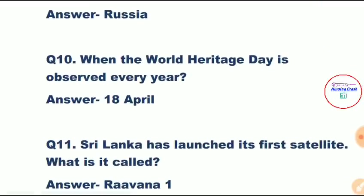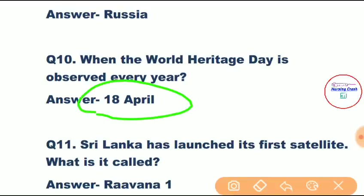Question number ten: When is World Heritage Day observed every year? Correct answer is 18th April. World Heritage Day, also known as the International Day of Monuments and Sites, was observed across the world on April 18, with an aim to create awareness among people to conserve and protect valuable assets and cultural heritage across the world.